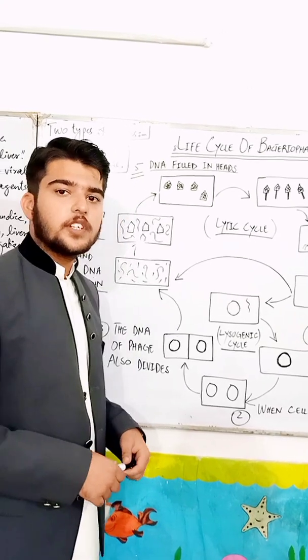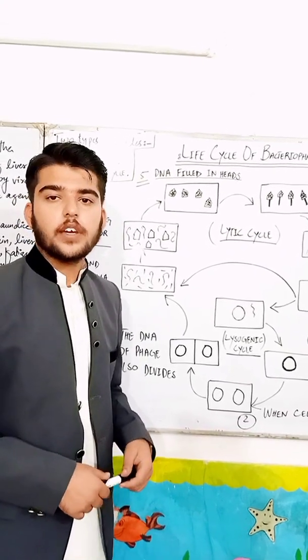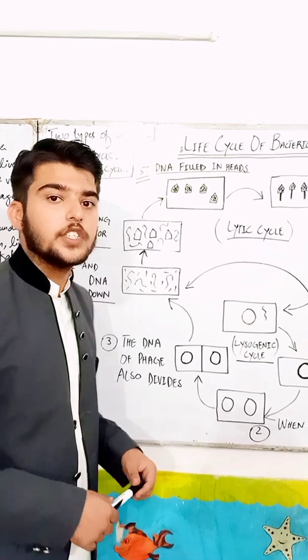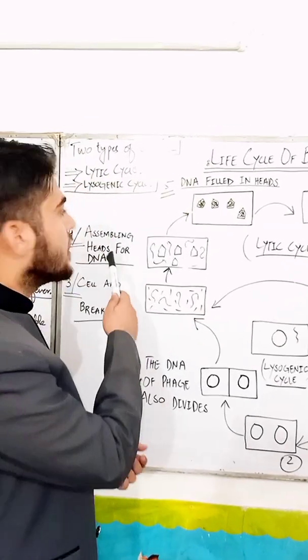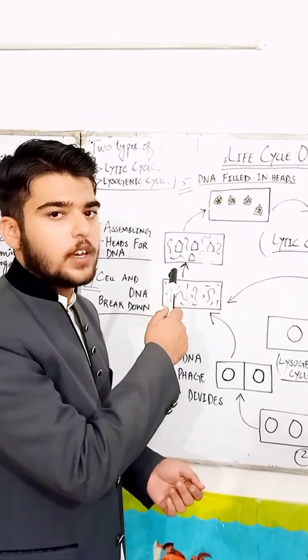What is the life cycle of a bacteriophage? There are two types of cycles in a life cycle of a bacteriophage: one, the lytic cycle, and number two, the lysogenic cycle.